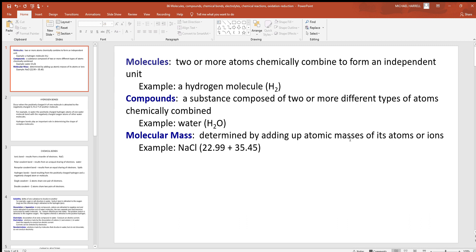So a very simple example of a molecule are two hydrogen atoms chemically combined with each other. Next we have compounds, a substance composed of two or more different types of atoms chemically combined. So a very simple example of a compound in the human body is water, H2O.